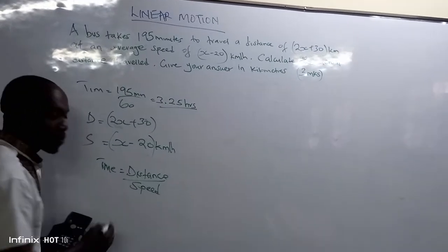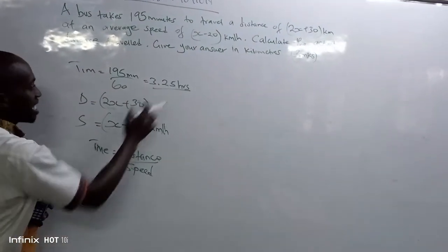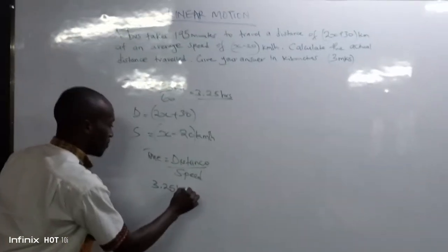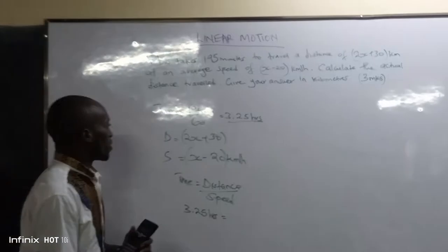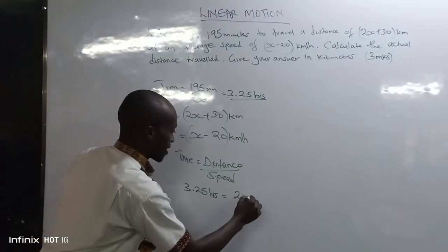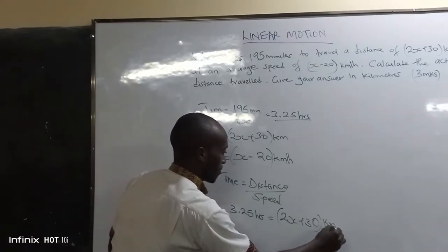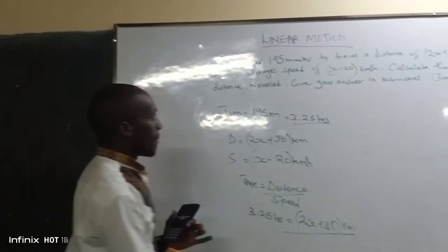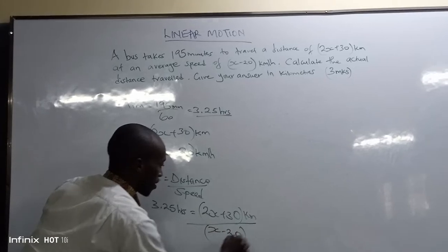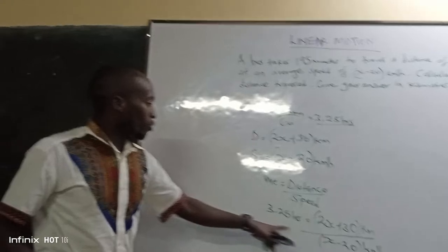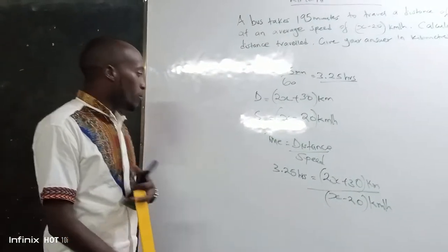Now we insert the values we have. Time is 3.25 hours, which equals distance — 2x plus 30 — divided by the speed, which is x minus 20 km per hour. When you have an equation like time equals distance over speed, what comes to mind is the equal sign with terms on both sides.